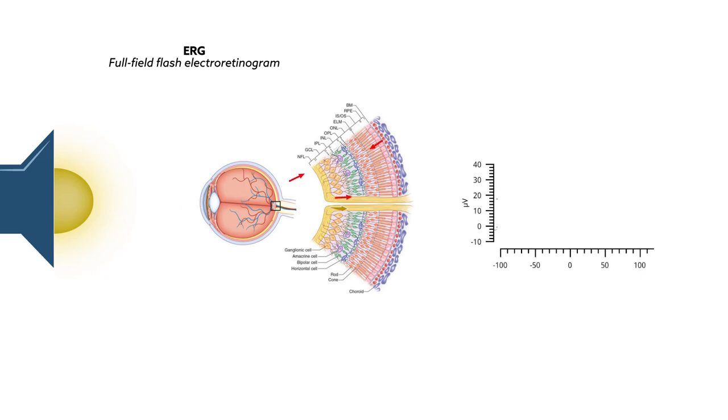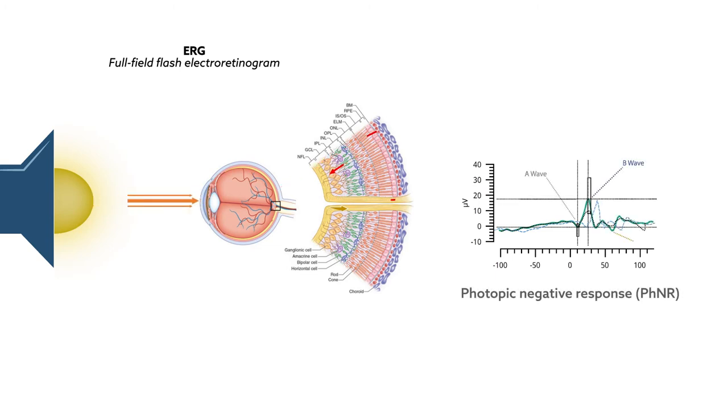An ERG uses light to assess the function of photoreceptor, bipolar, and ganglion cells in the eye. In particular, it measures what's known as the photopic negative response. This response is specific to ganglion cells and can reflect the presence and severity of glaucoma.